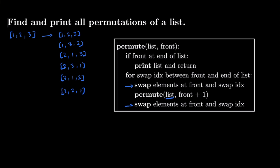The stopping condition is when front is at the end of the list, because then there are no more swaps we can make. In that case we have a unique permutation, so we print it and return. The main backtracking component is: swap to make a change to the list, permute with front plus one going closer to the stopping condition, and then restore what we had before with the second swap.